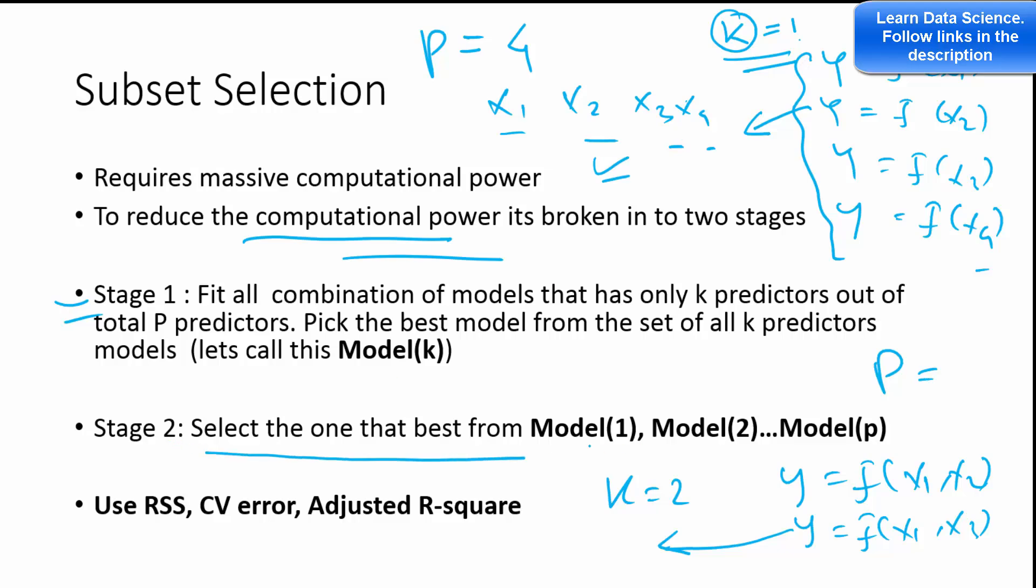In the second stage, select the one that is best out of this. So when k equals 1, you have one model that is best out of this group. When k equals 2, you have one model that is best out of this group. And then for p variables, you will have such p number of models. Best set of models. Select the best out of it.